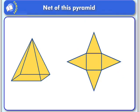Here we have a net of a pyramid. Again, start with the base, and then draw the lateral faces. The lateral faces on a pyramid are triangles.